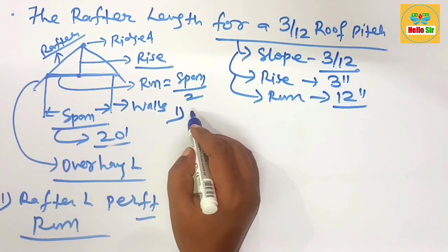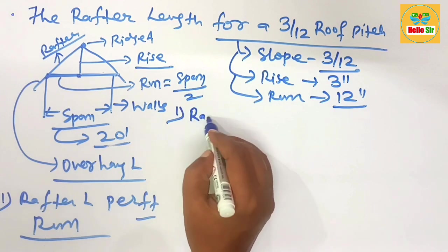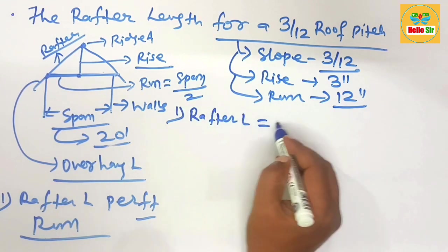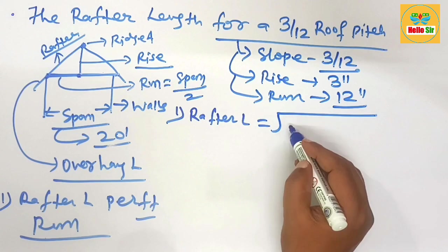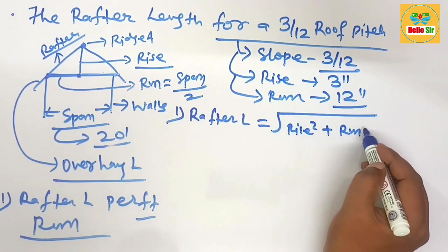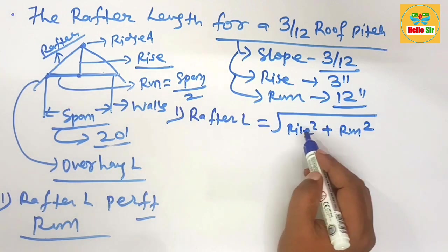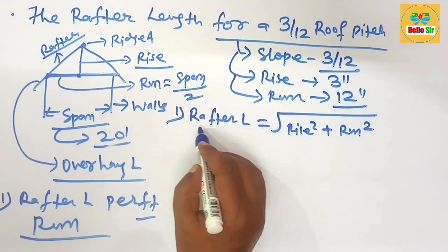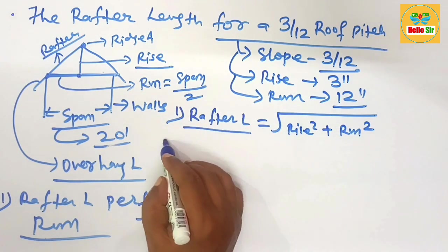We calculate according to the Pythagorean theorem: the rafter length equals the square root of rise squared plus run squared. This is the formula to calculate the rafter length.